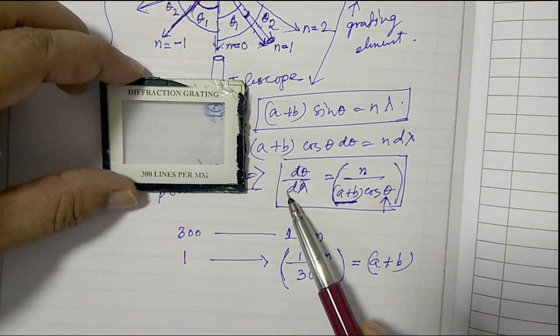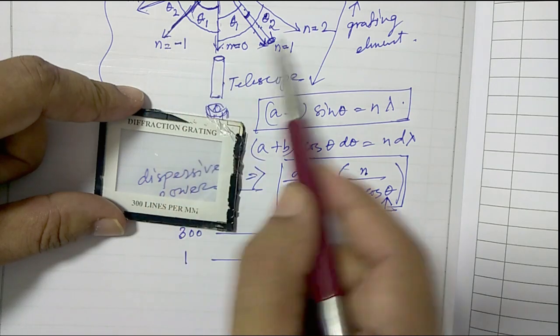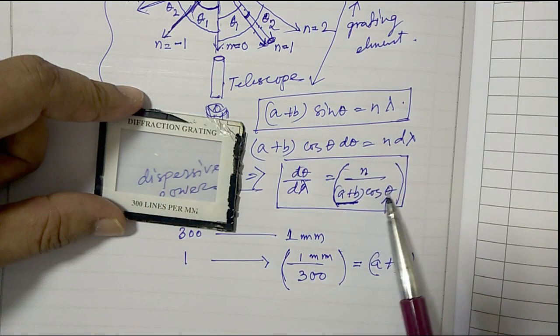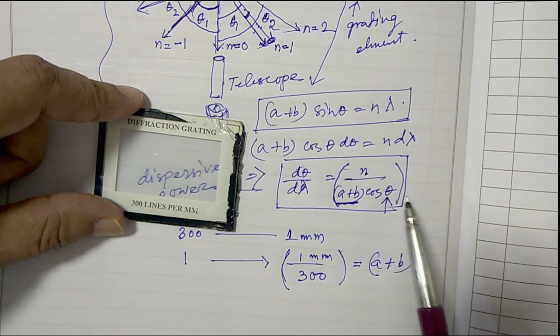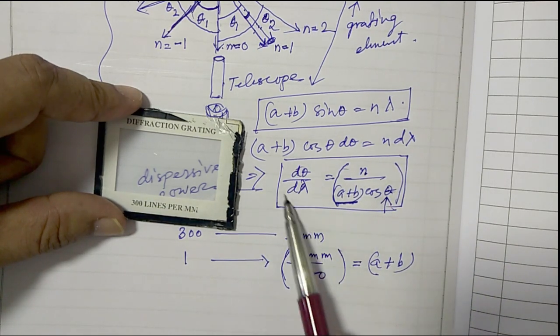Of course, we will measure for different n how much is the theta. And from there, we will have theta and a plus b given from this equation, and we will be able to calculate the dispersive power.